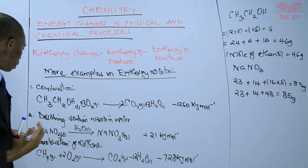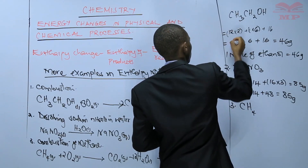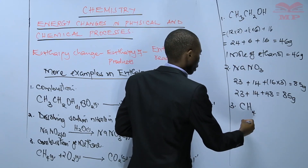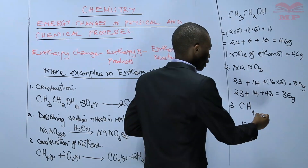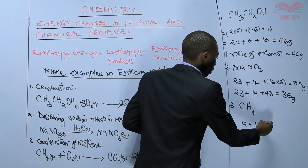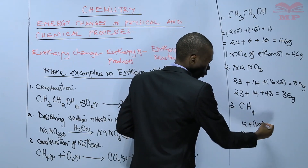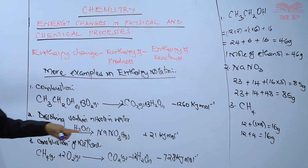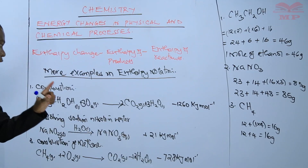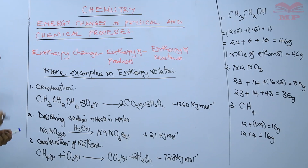For our last example, combustion of methane (CH₄): carbon has a mass of 12, and hydrogen has mass 1 with four hydrogen atoms, so 1 × 4 = 4. The molar mass of methane is 12 + 4 = 16 grams per mole. Therefore, to get negative 728 kilojoules of energy lost, you have to burn 16 grams of methane.